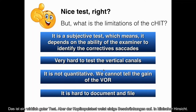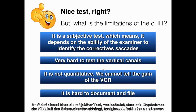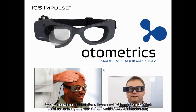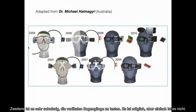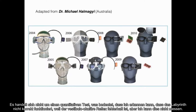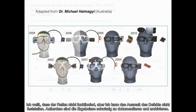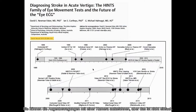The bedside Head Impulse Test has some limitations. First, it is a subjective test — it depends on the examiner's ability to identify corrective saccades, which is not always easy, especially if the patient has covert saccades. Second, it's very hard to test the vertical canals. Third, it is non-quantitative — I can tell the labyrinth is not working properly because the VOR is deficient, but I have no way to measure how much it is not working. And it is hard to document in a file.